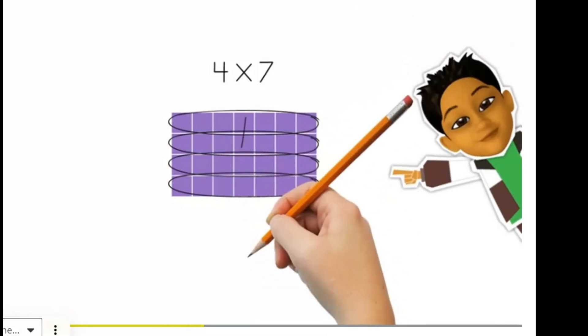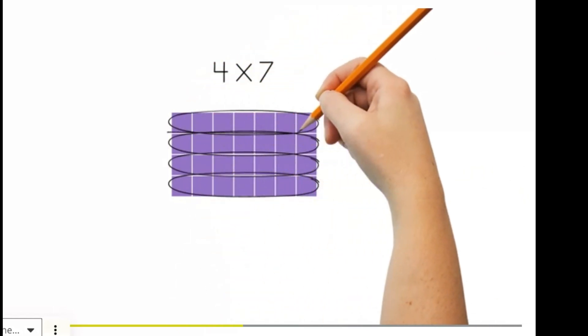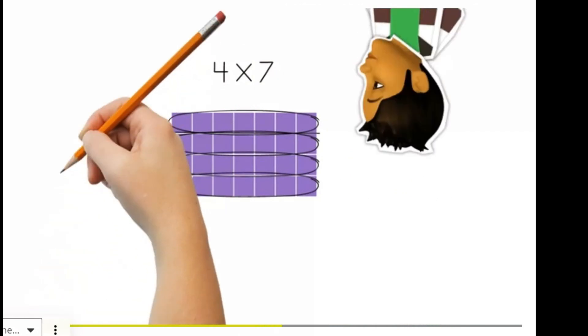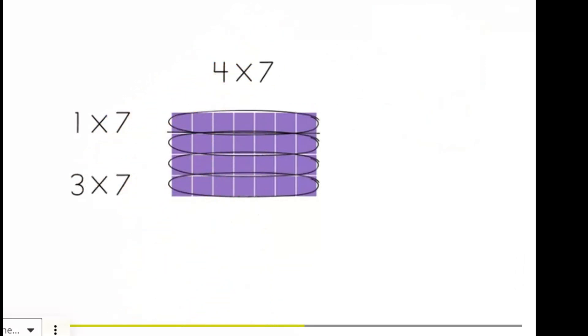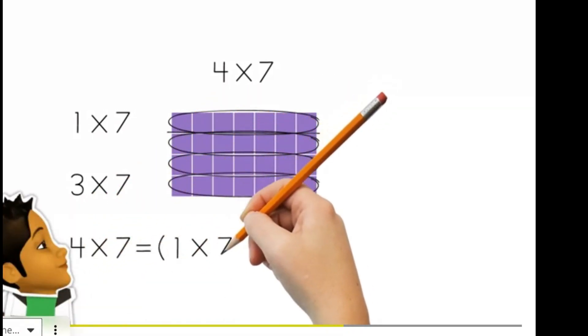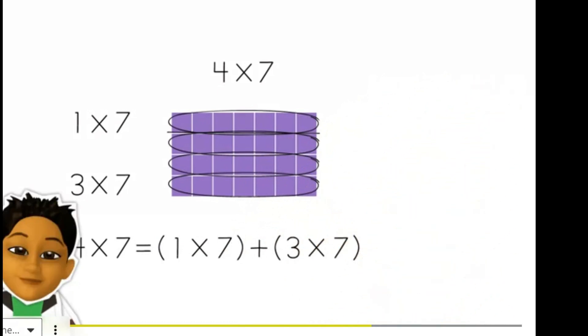The distributive property tells us that we can break this array up to help us understand the multiplication problem. We're going to break it up into even groups, like this. Now, we have one group of seven and three groups of seven. One times seven and three times seven. Exactly! Breaking up this array shows us that four times seven is equal to one times seven plus three times seven. That's the distributive property.